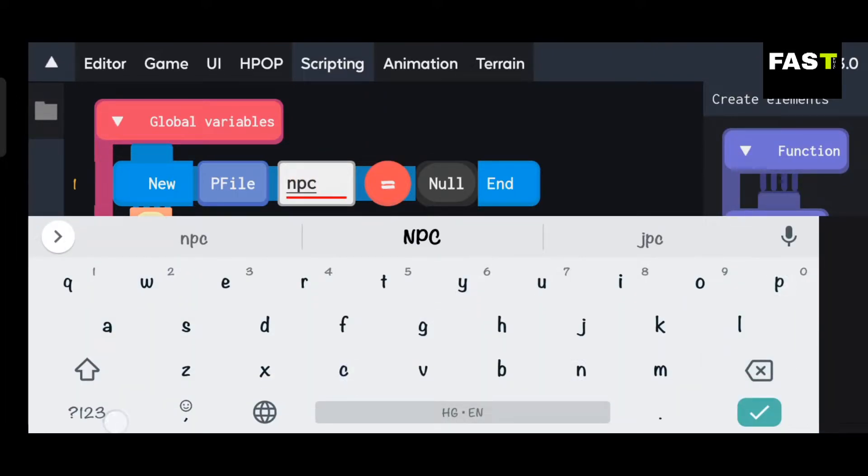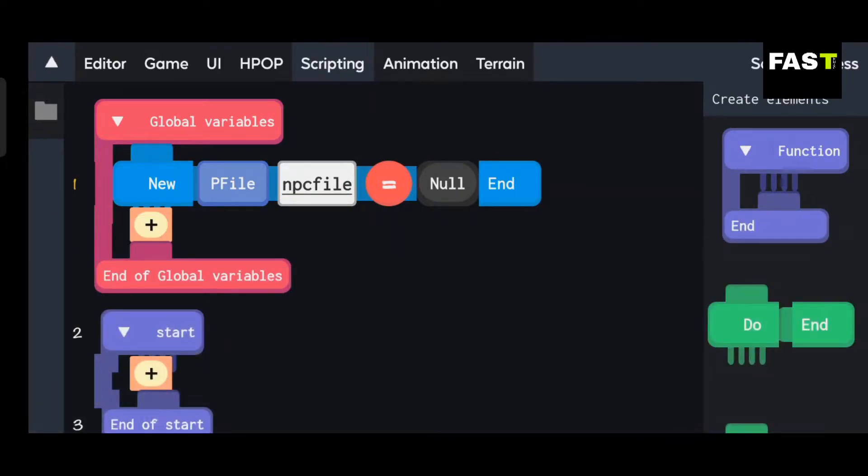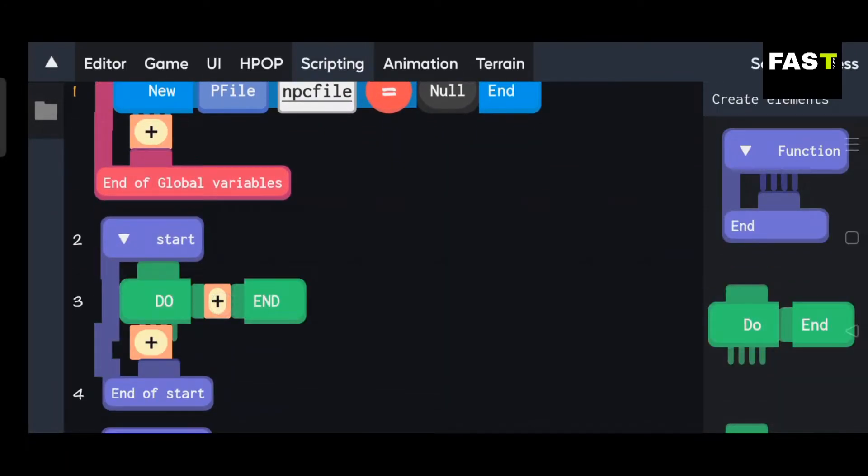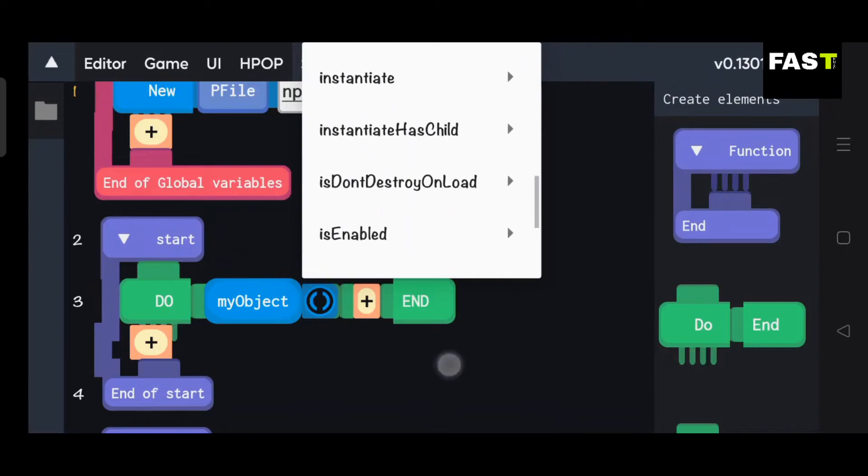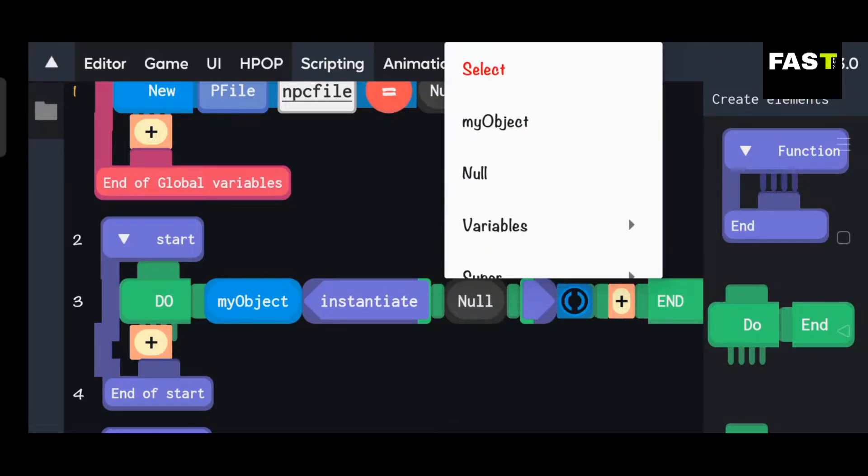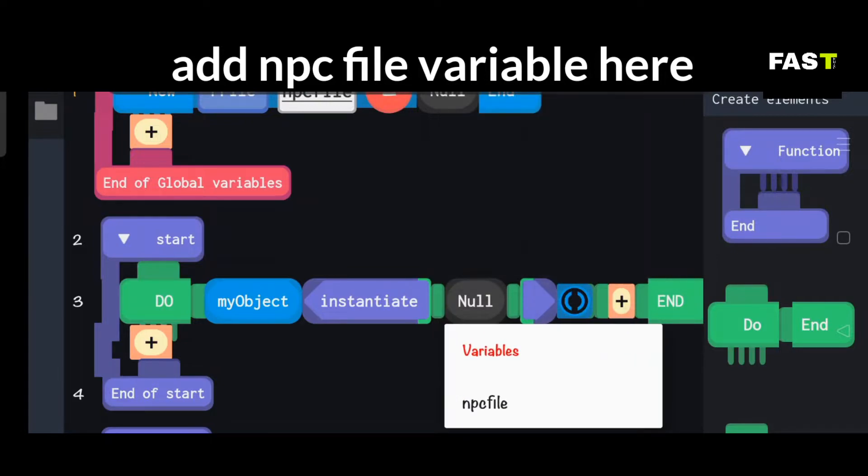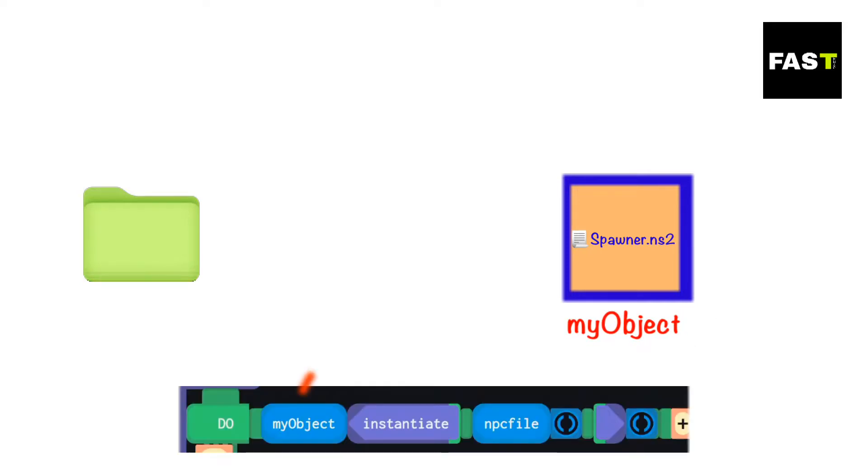We have created this P File variable. This will pick the file of the object which we want to spawn. My object instantiate will spawn object at the position of my object. For example, this is our object which we want to spawn. We will put this object into a file. The object which contains a script is known as my object of that script. My object instantiate will spawn the file object at the position of my object.